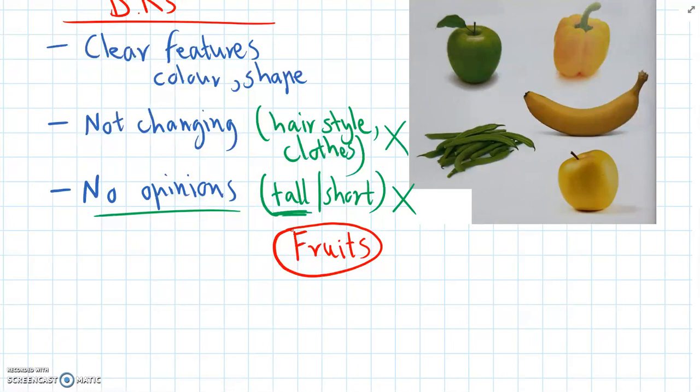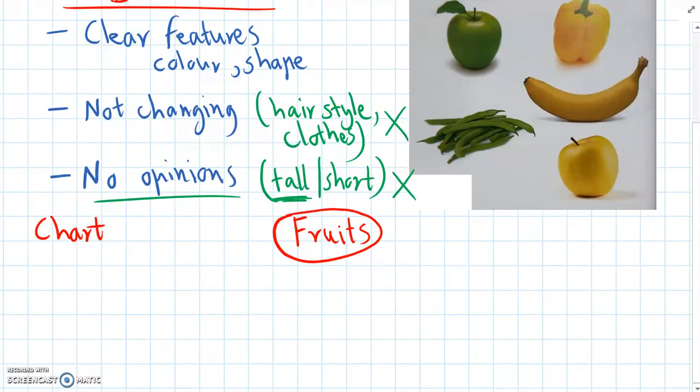And just before we go on, we're going to be making the chart version of a dichotomous key. Remember there's a table version as well, but a chart is much easier to do when we're first learning.